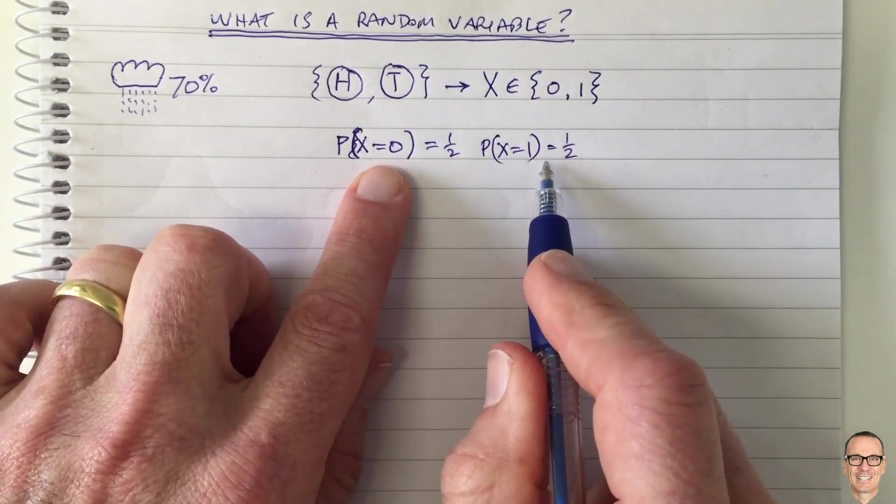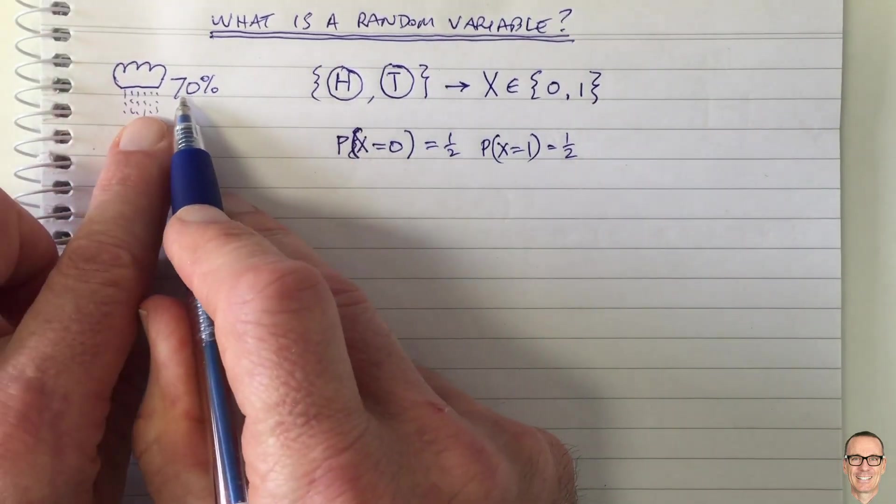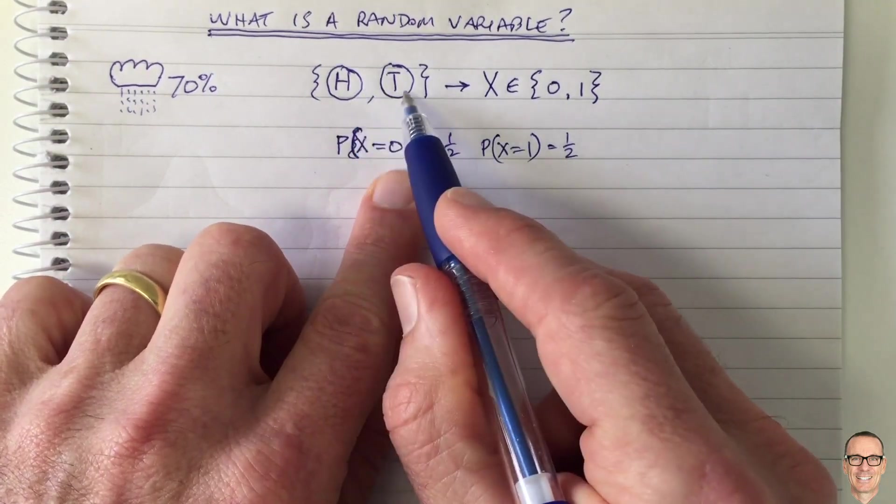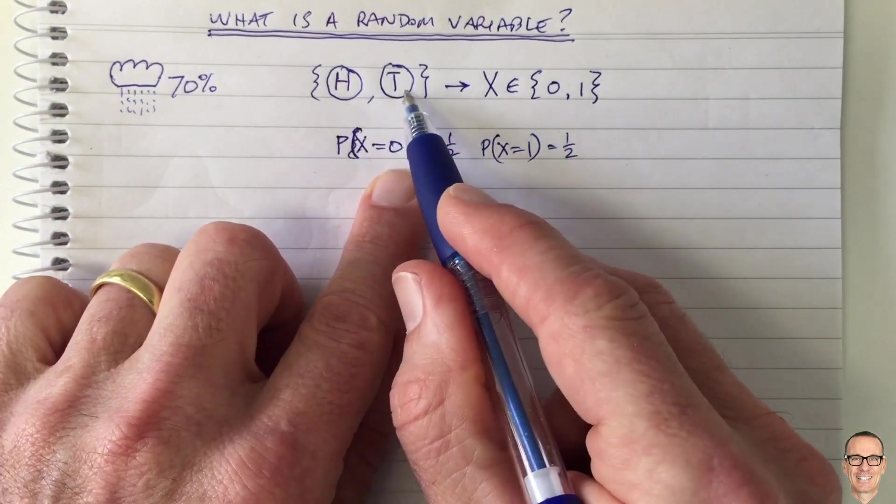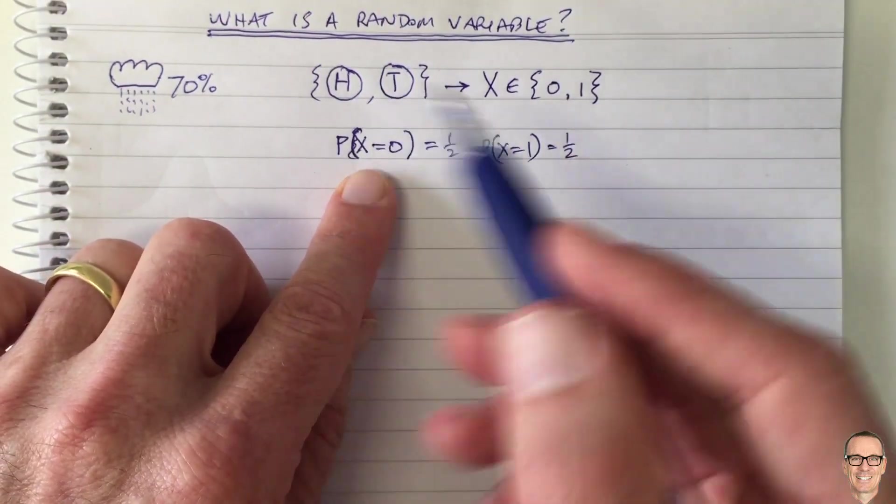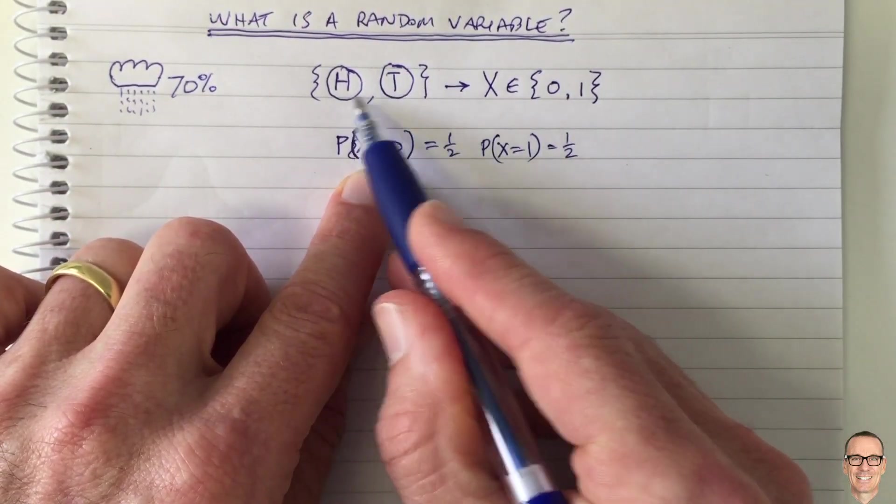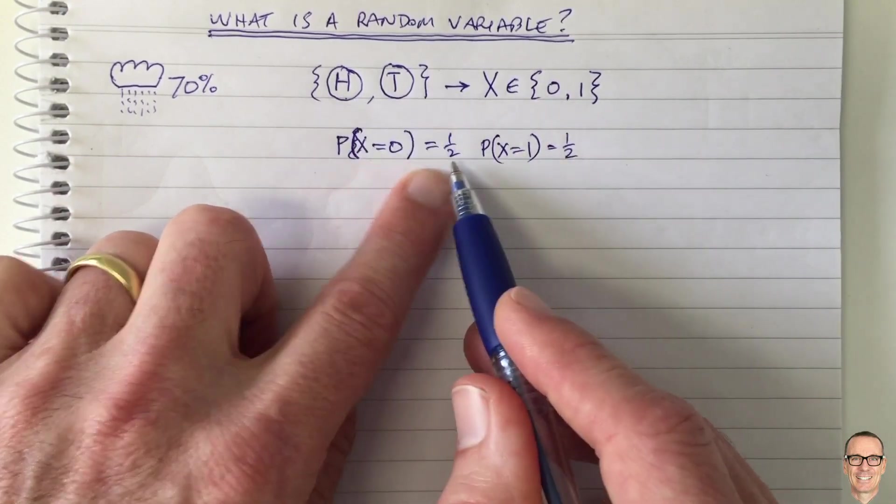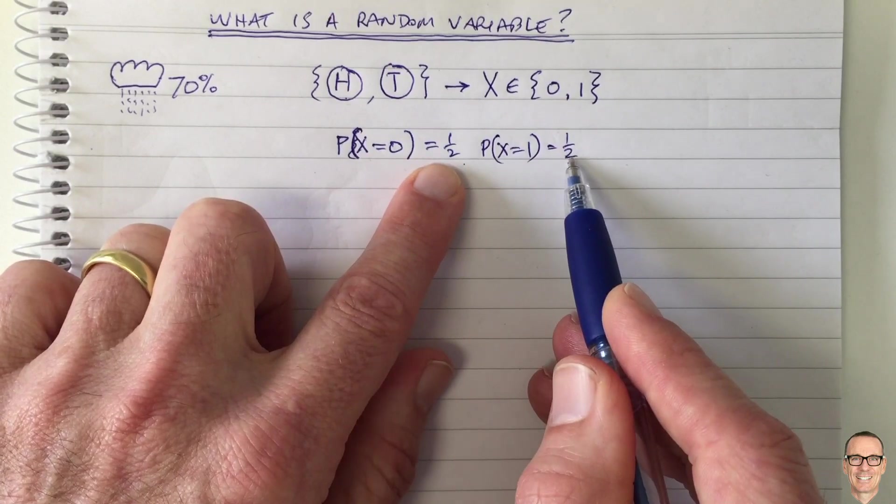Now how do we know these? Well, how do we know over here that it's 70%? In this case, it's given to us from physics. We know that a coin, unless it lands on its edge, when we toss it and give it a random amount of input, it spins around. Half the time it will land on a head and half the time on a tail. So physics tells us these numbers.